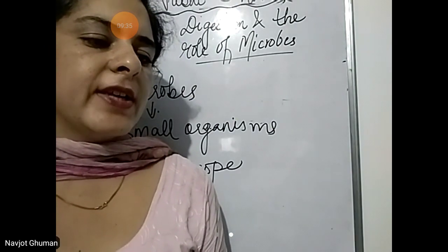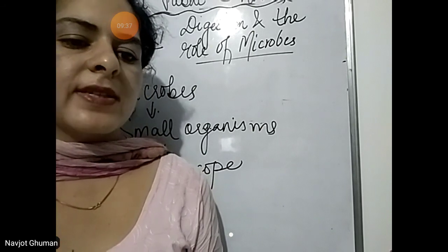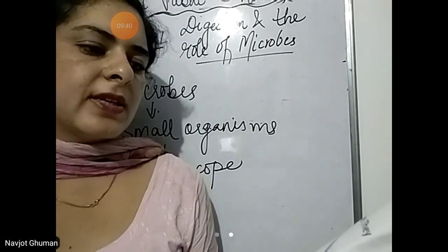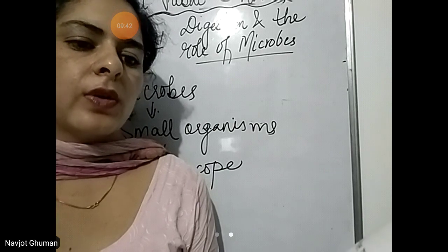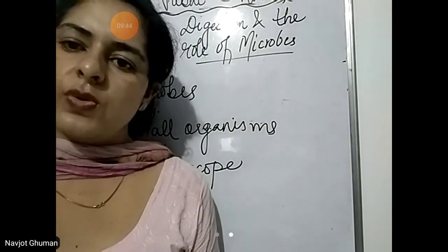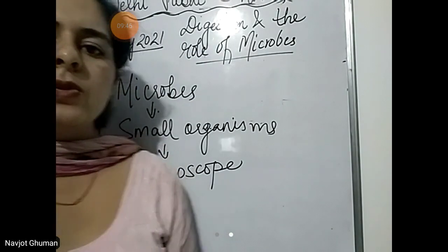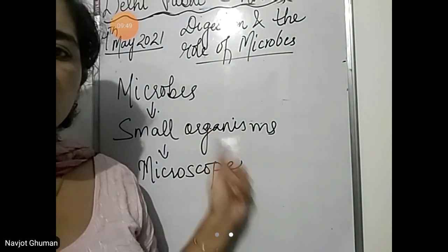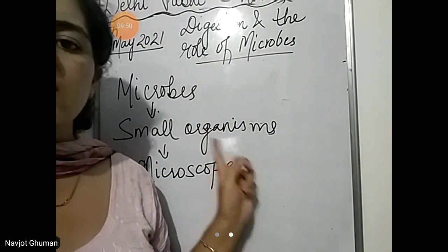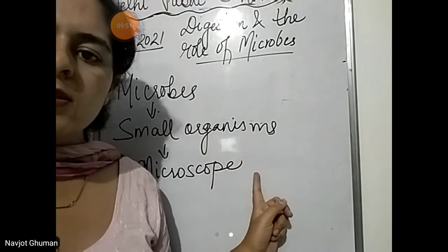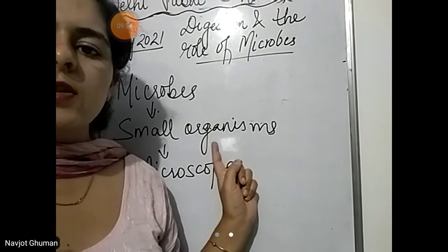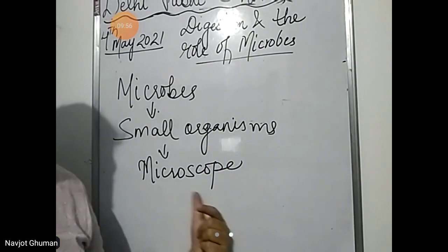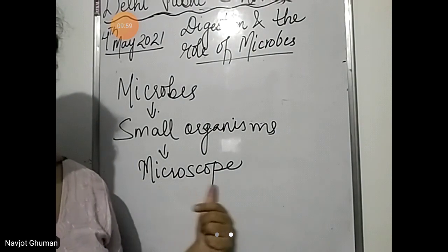Microbes are very small living things that cannot be seen with the naked eyes. They can be seen only with the help of an instrument called a microscope. These are very small living organisms — they cannot be seen with the naked eyes and can only be seen with the microscope.